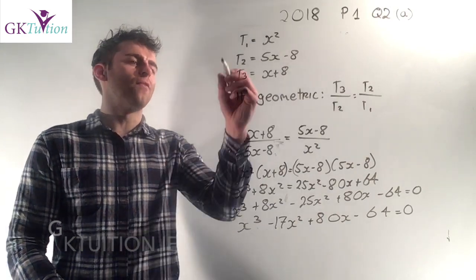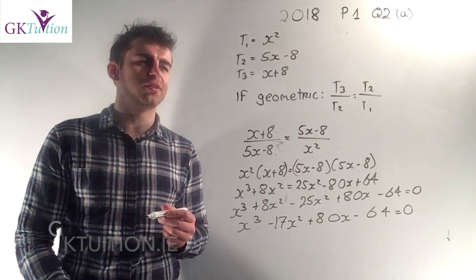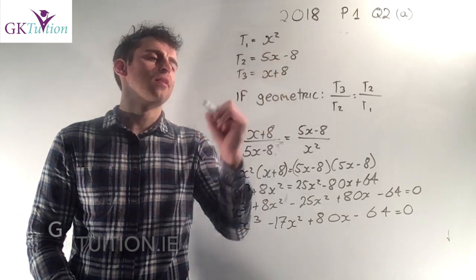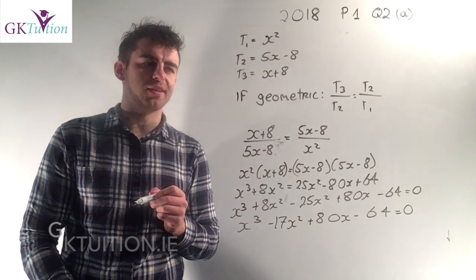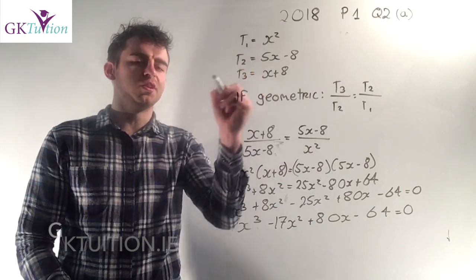In this question we're told that the first three terms of a geometric sequence are x squared, 5x minus 8, and x plus 8. So I know my t1, t2, and t3.